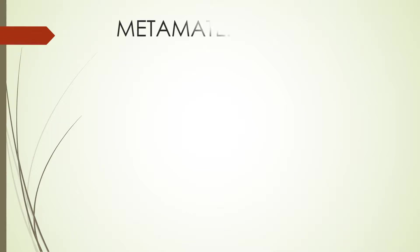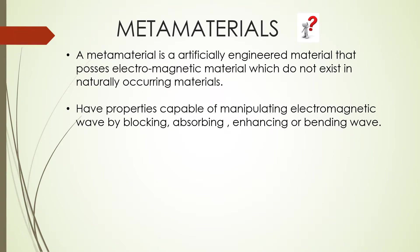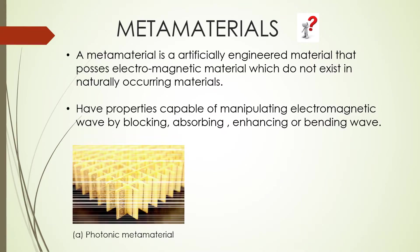A metamaterial is a material engineered to have a property that is not found in nature. They are made from assemblies of multiple elements fashioned from composite materials such as metals or plastics. The materials are usually arranged in repeating patterns at scales that are smaller than the wavelengths of the phenomena they influence. Metamaterials derive their properties not from the properties of the base materials but from their newly designed structures.